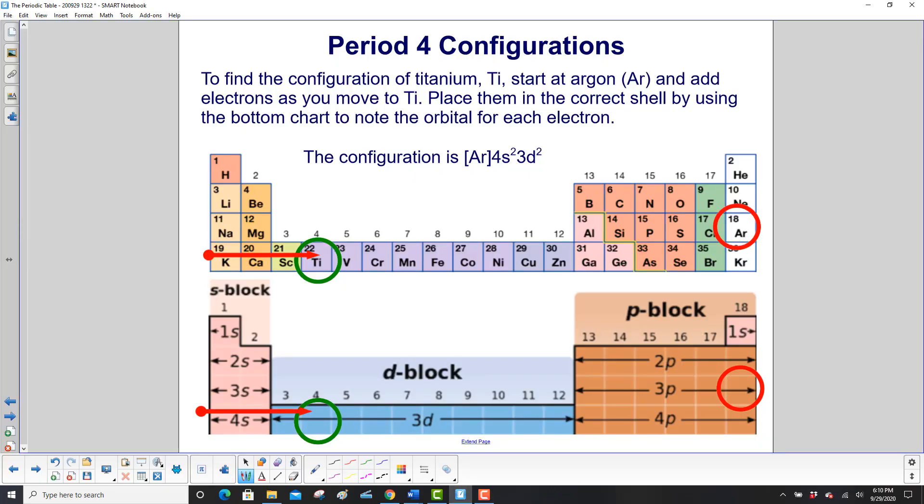To find the configuration of titanium, which is right over here in green, start at argon, the noble gas in the period above it, and add electrons as you move to titanium. Place them in the correct shell by using the bottom chart to note the orbital for each electron.